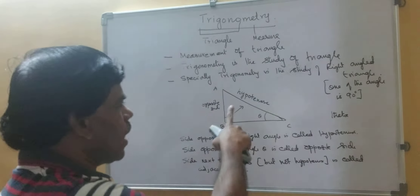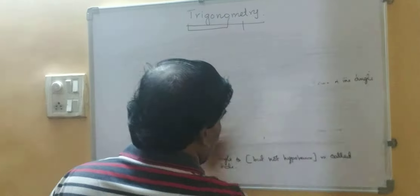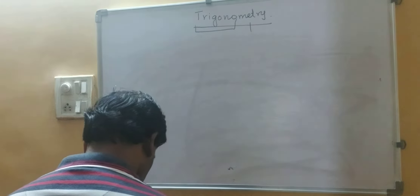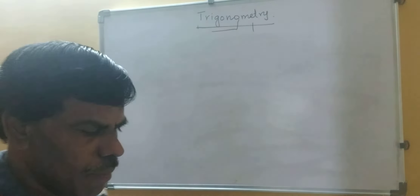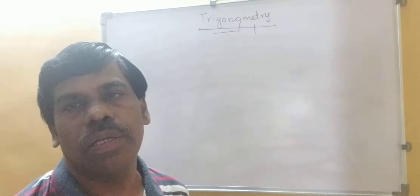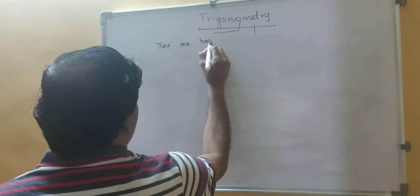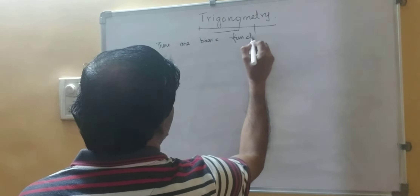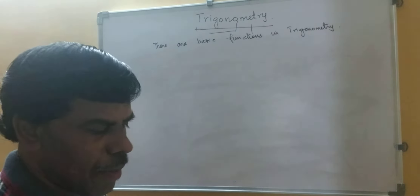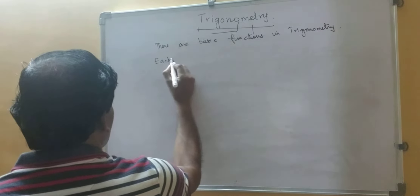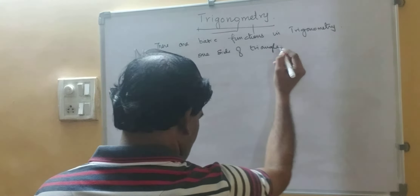Now we have seen what is the right triangle and how we name the three sides. There are three basic functions in trigonometry, where each one is one side of the triangle divided by another side.